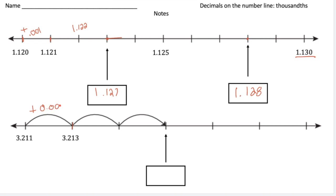Add that in for me. So we're going to add 2 thousandths for every mark that we go up. So that means this is going to be 3.215 and then this one is going to be 3.217 and so on.